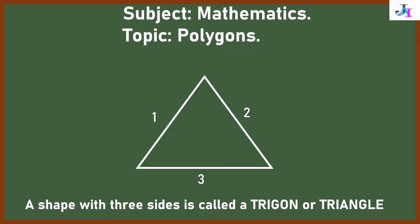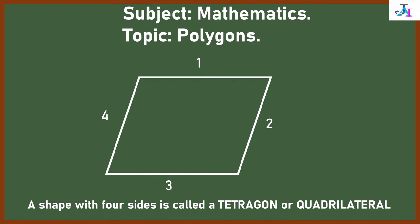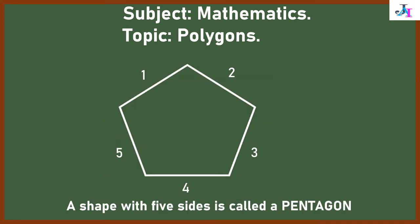The first one here has three sides. Remember I said that a polygon has three or more sides. This one here has three sides and it's called a trigon, or you can call it triangle. This one has four sides and it's called tetragon or quadrilateral. A shape with five sides is called a pentagon.